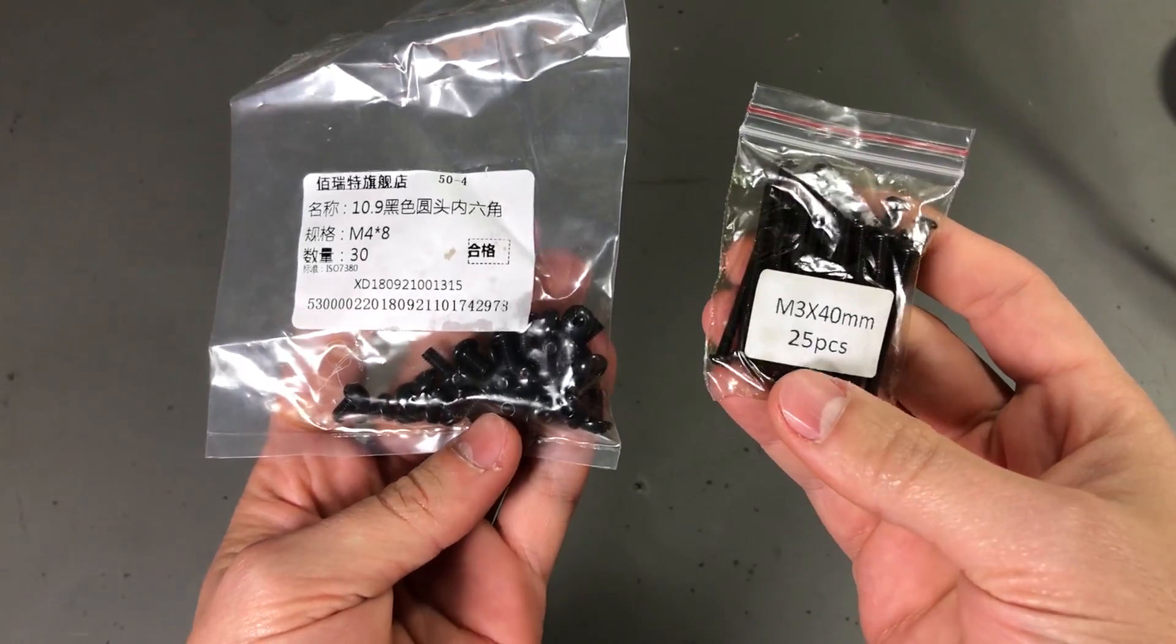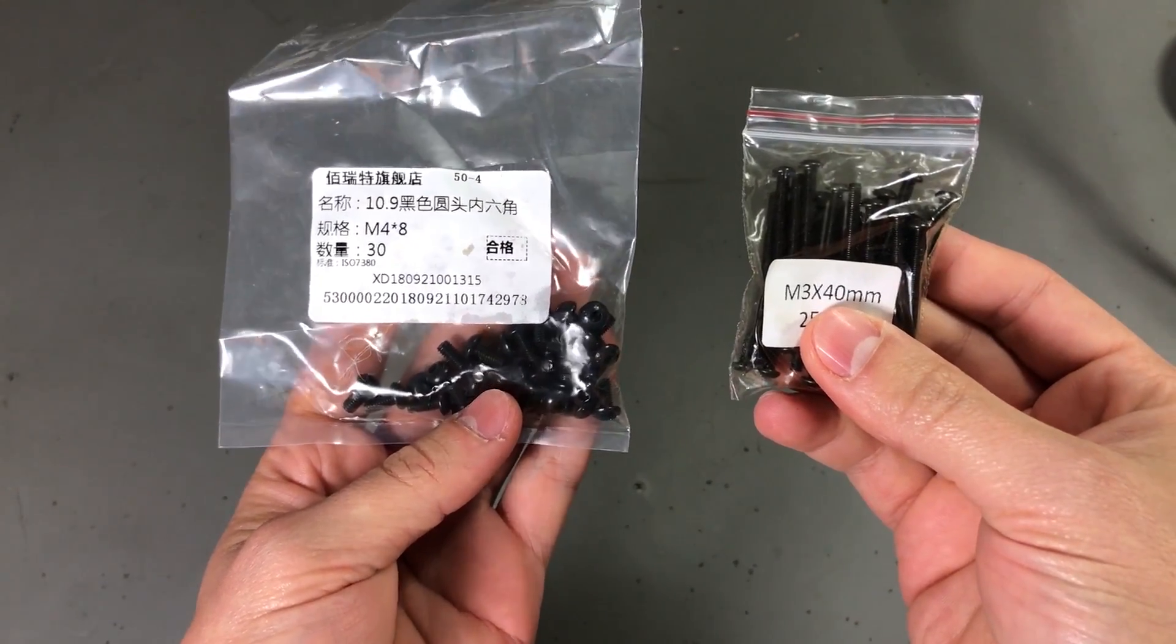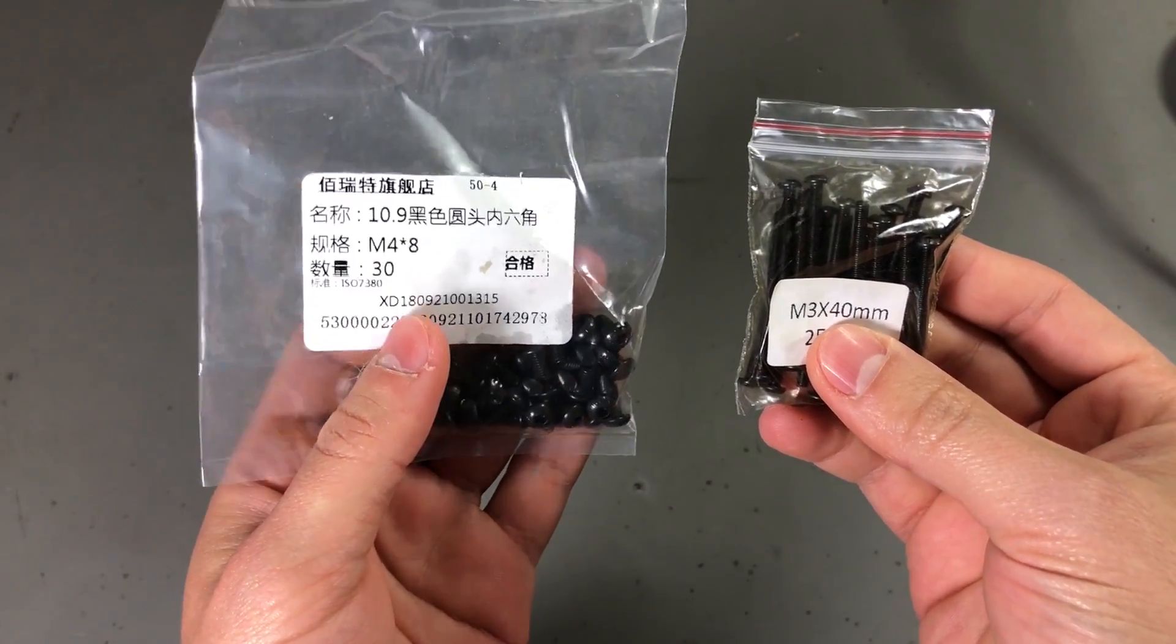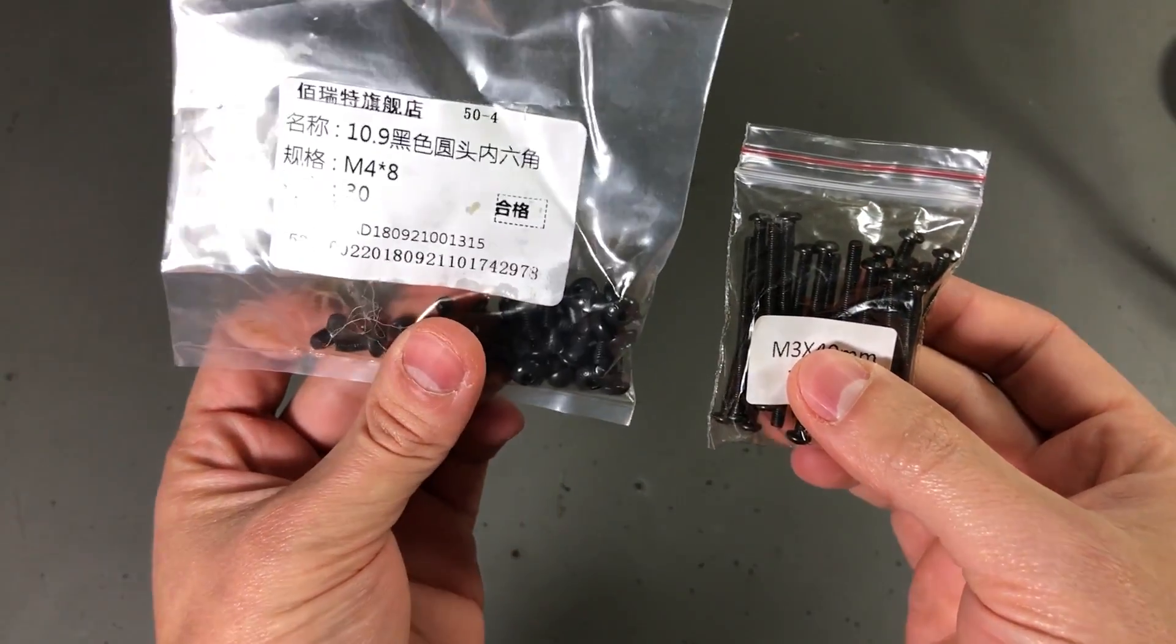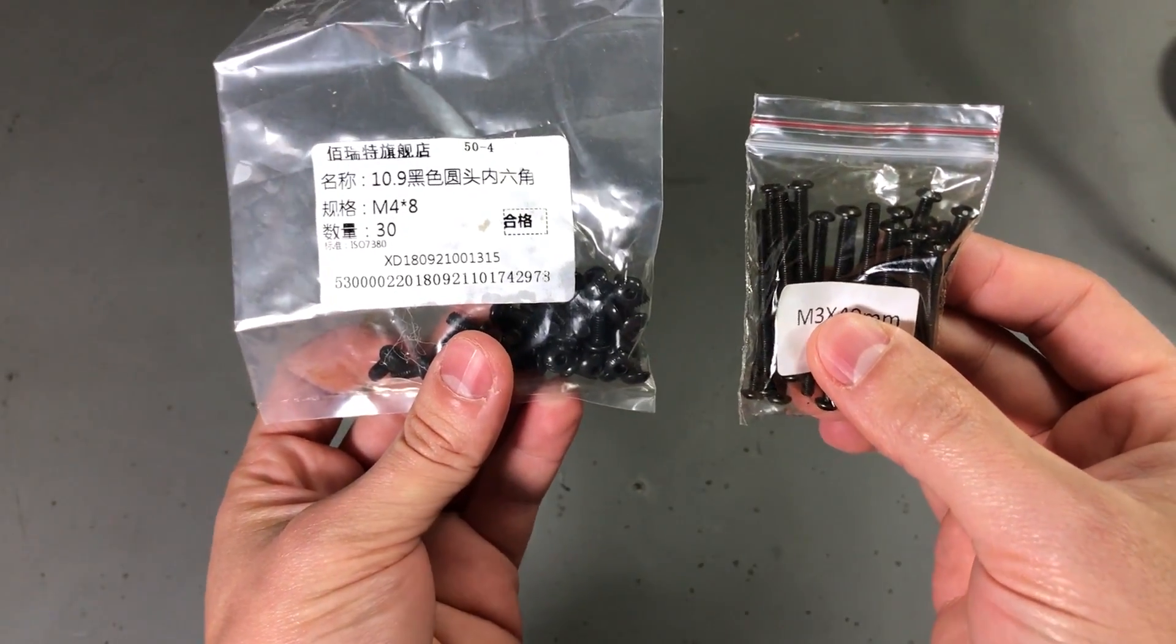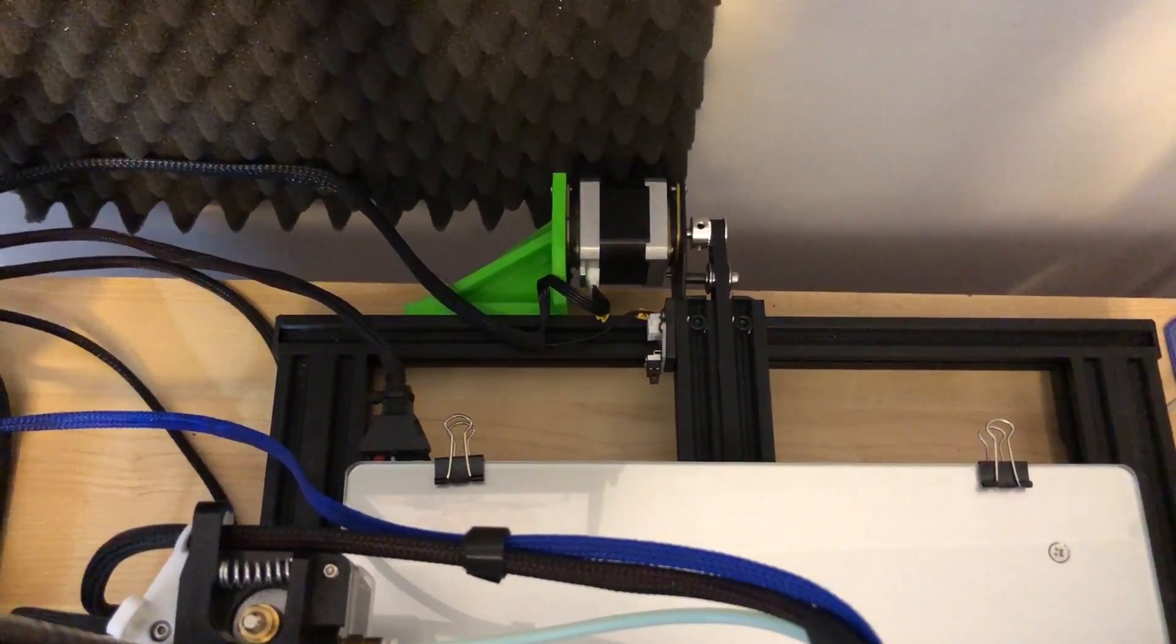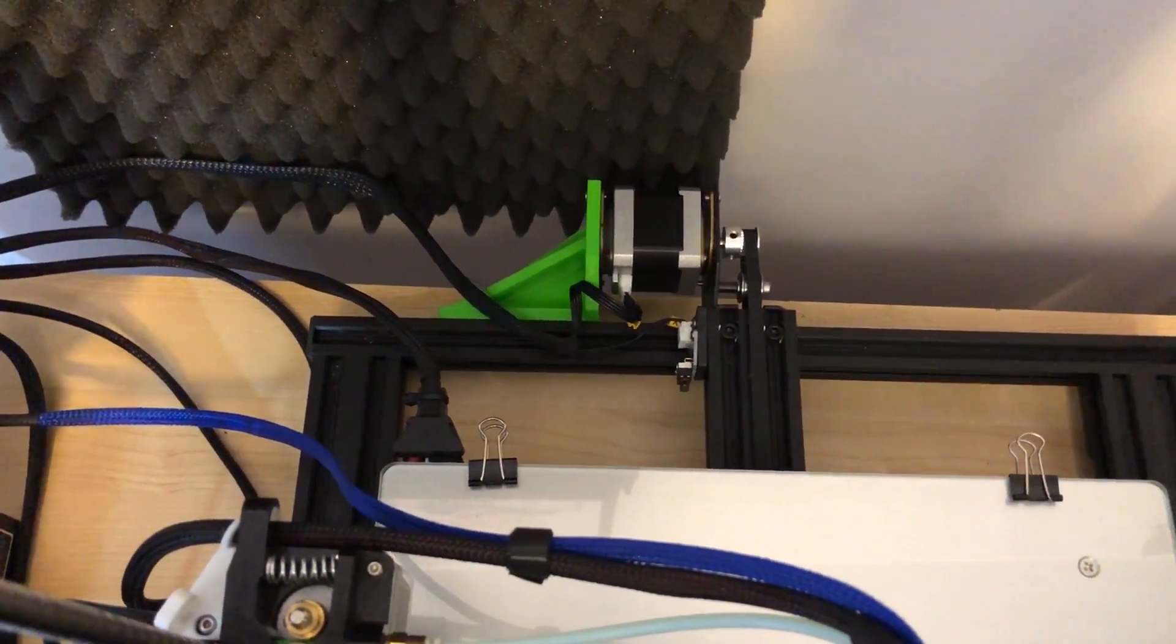Next, I have some sets of screws. These are M3x40mm and M4x8mm. And I needed these for a recent upgrade on my CR10 3D printer. I added two dampers to the Y-axis motor and a bracing structure to keep the motor aligned.